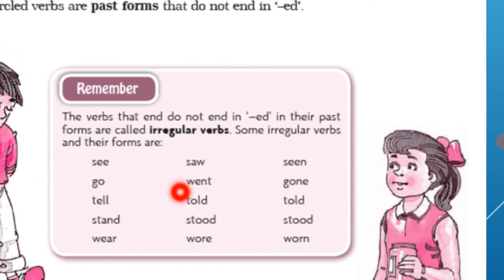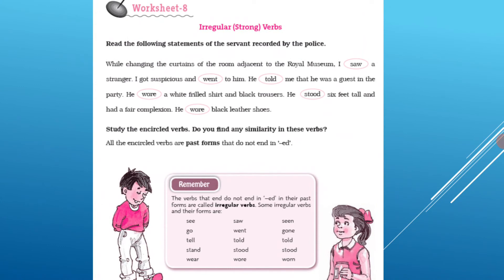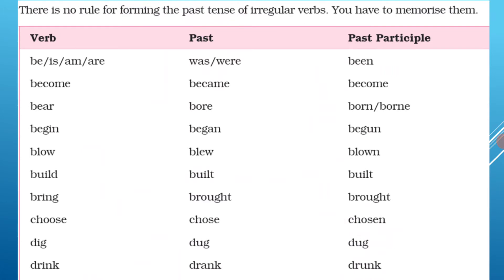For example: 'see', 'saw', 'seen'; 'go', 'went', 'gone', and some other verbs. In the very first video of this unit, we came to know about the three basic types of irregular verbs. Students who have not joined their online classes can watch that video — the very first part. There are no rules for forming the past tense of irregular verbs. You have to memorize them. There are no rules — those rules applied to regular verbs.